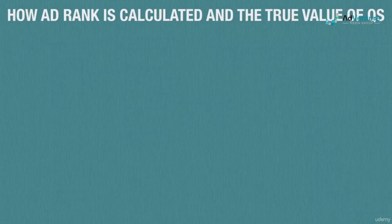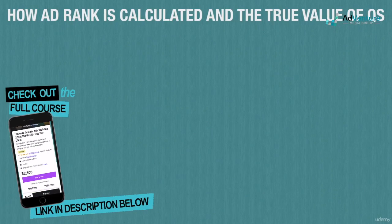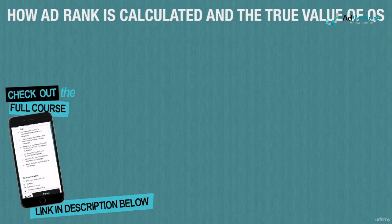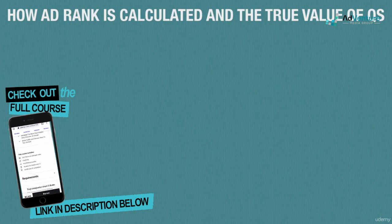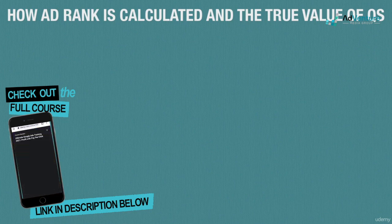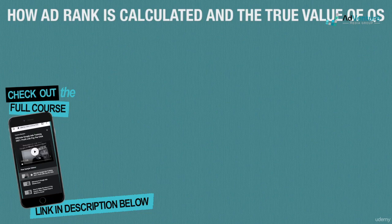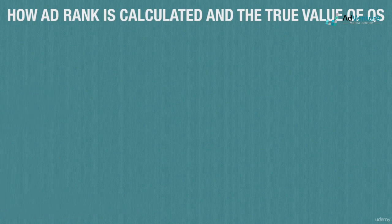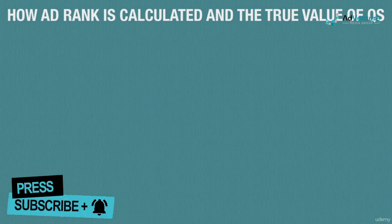We're going to start talking about how to calculate ad rank and your actual CPC. You now understand quality score and the auction, and now we're going to dive into the modern day Google AdWords auction — understanding what your ad rank number is, how it determines your place in the auction, and how the auction works to determine what you pay when your ad gets clicked.